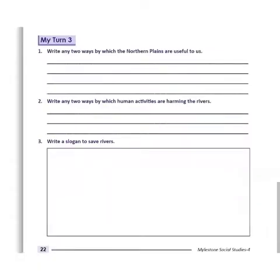Now, My Turn 3 from your practice book. Write any two ways by which the northern plains are useful to us — northern rivers provide water to the fields and provide cheap means of transport. Write any two ways by which human activities are harming the rivers — humans harm rivers by throwing waste from factories into them and by throwing pooja material into the river. Write a slogan to save rivers — 'Say no to river pollution.'